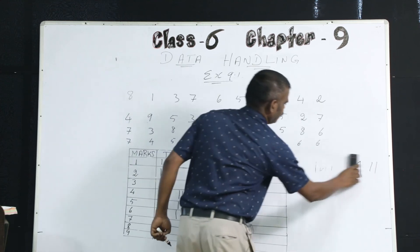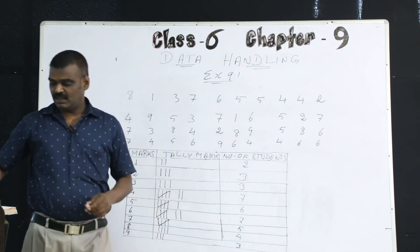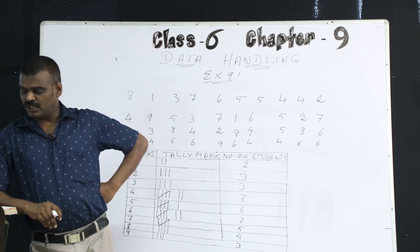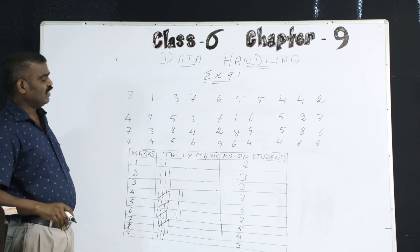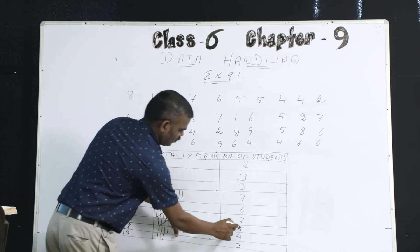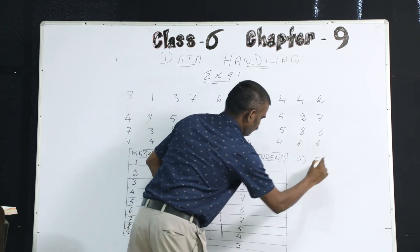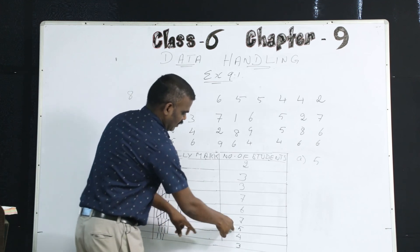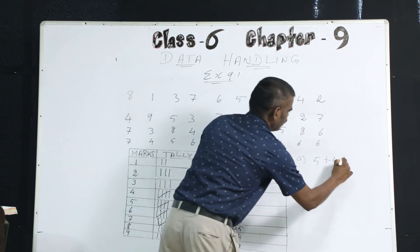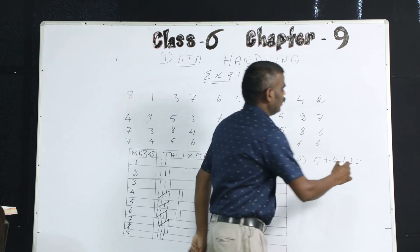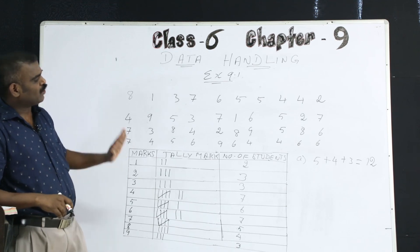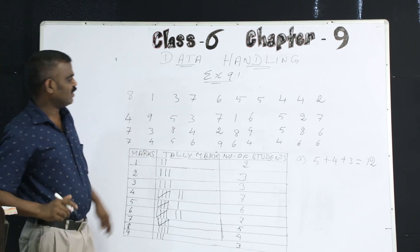There are two sub-questions. Question A: find how many students obtained marks equal to or more than 7. Marks equal to or more than 7: those who got 7 marks — 5 students. 8 marks — 4 students. 9 marks — 3 students. So 5 plus 4 is 9, plus 3 is 12 students. 12 students got marks equal to 7 and above.